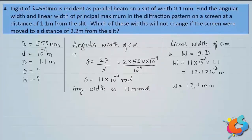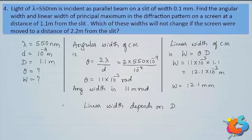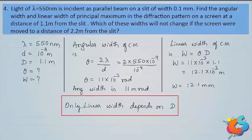When the screen distance is changed, which of these two widths will change? From the expressions, the angular width θ = 2λ/d is independent of the screen distance, so it remains constant. Only the linear width w = 2λD/d depends on the screen distance D. Therefore, when the screen is moved, only the linear width will change, not the angular width.